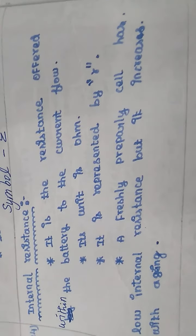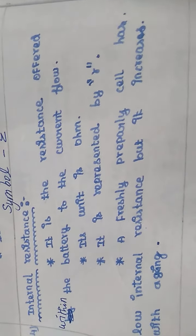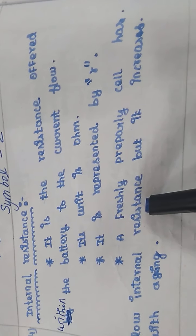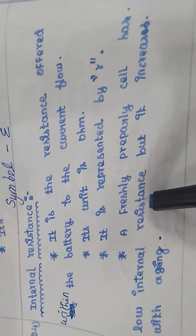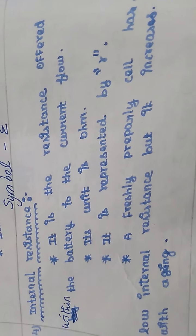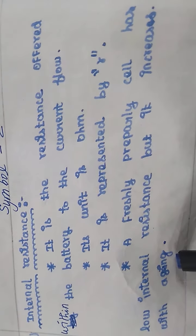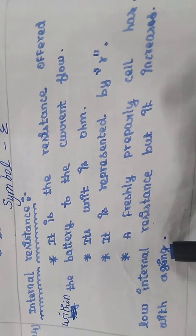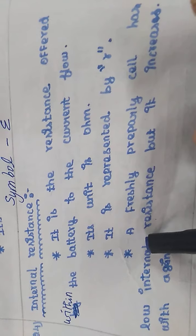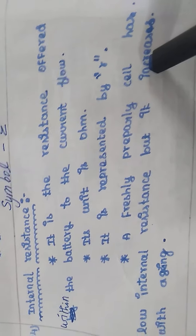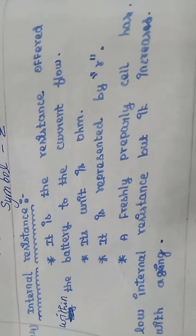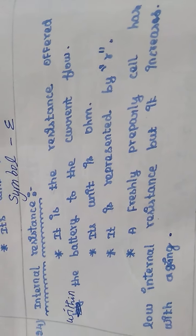When a cell is new, the internal resistance is very low. Once the usage is higher, the internal resistance will automatically increase — it increases with aging. As internal resistance increases, the current output becomes less. So internal resistance is inversely related to the current value.